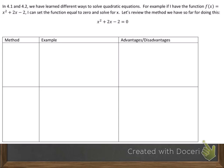In the previous sections, we have learned different ways to solve quadratic equations. For example, if I have the function f equals x squared plus 2x minus 2, I can set the function equal to 0 and solve for x. Let's review the methods we've learned so far doing this.